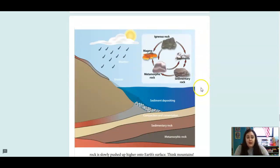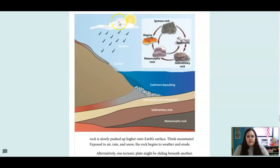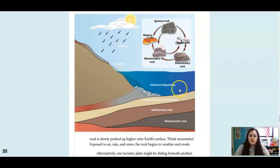Here is the rock cycle diagram, showing how a rock can turn from one kind to another. Igneous rocks, when subjected to magma, can turn into metamorphic rock. Sediments pushed together cause sedimentary rock. These rocks are always changing, very slowly over time. Weathering is the breaking down of rocks, and erosion is moving them from one place to another.